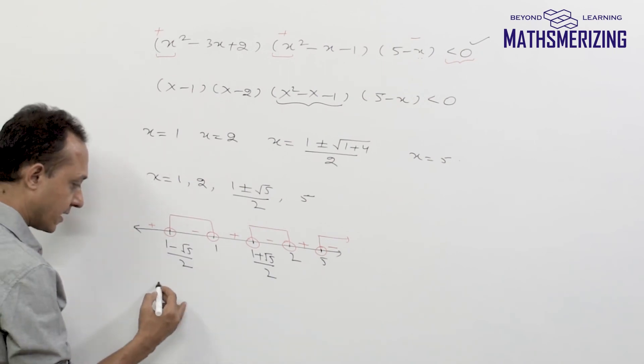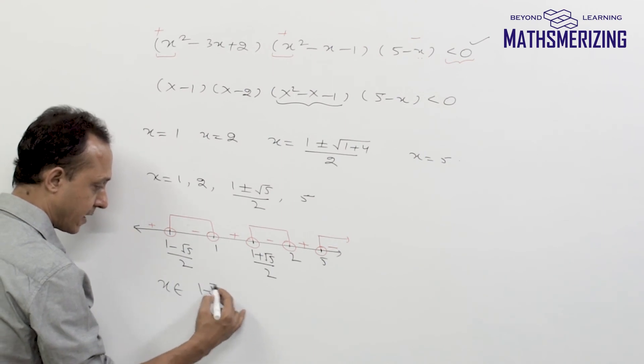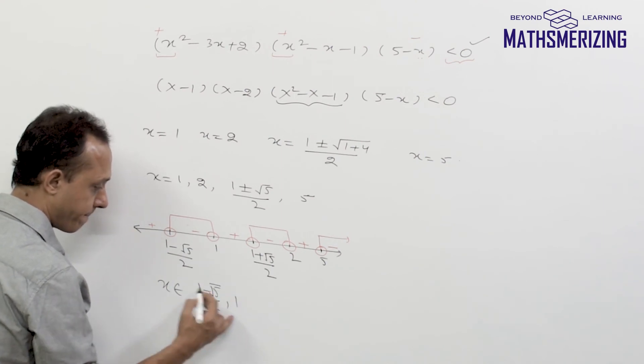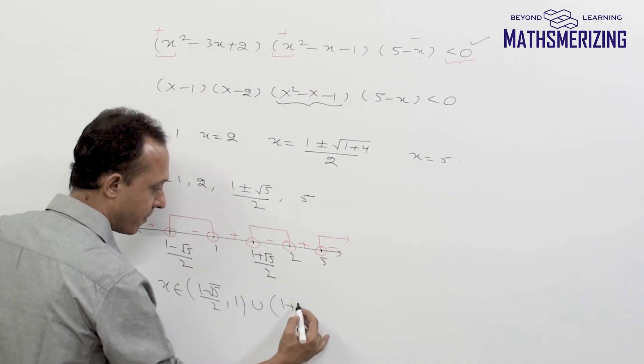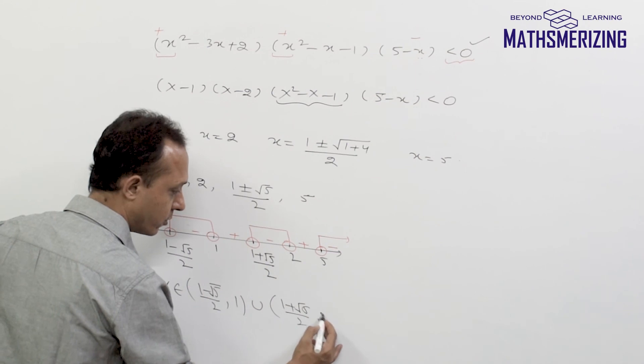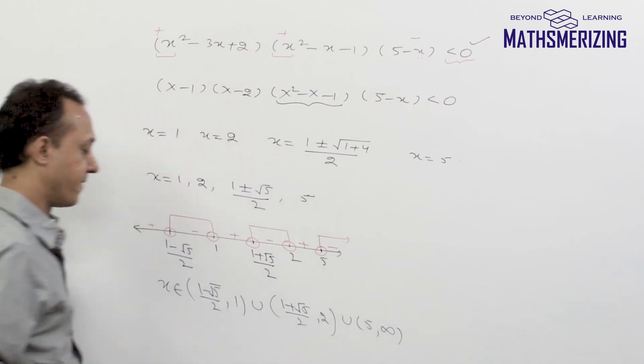So I'll simply write the answer to this. The first question is x belongs to 1 minus under root 5 by 2 to 1, both not included, union 1 plus under root 5 by 2 to 2 not included, and union 5 to infinity.